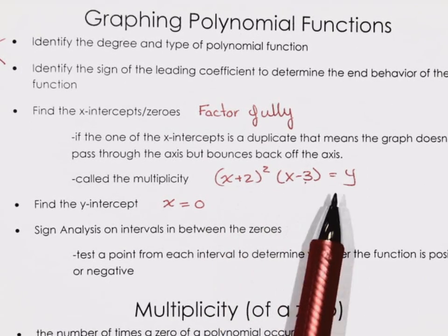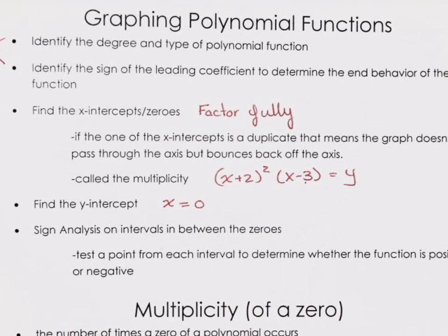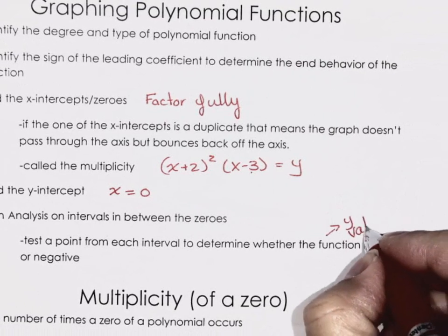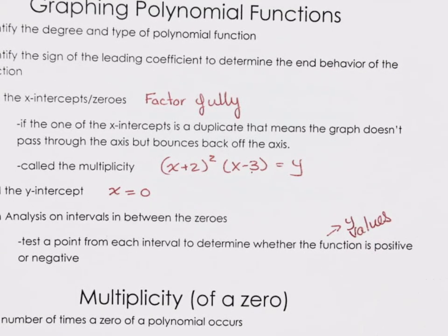So we'd have 4 times negative 3, and the y-intercept would be negative 12 on this particular graph. Just make sure you're doing the actual substitution. Sign analysis between the zeros: we're going to pick a test point in between the x-intercepts and decide whether the y-values are positive or negative. That's all we're doing — it's quite easy.